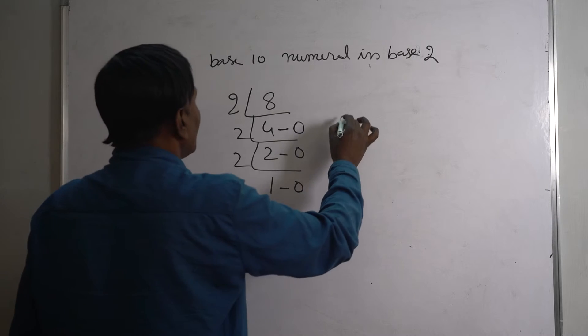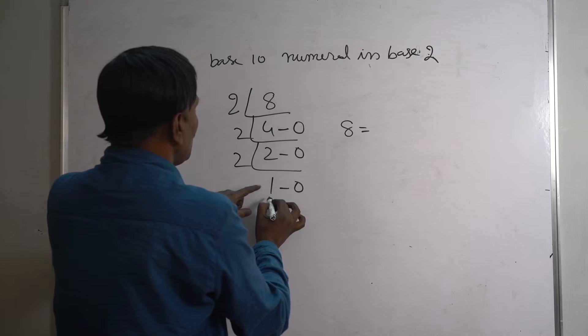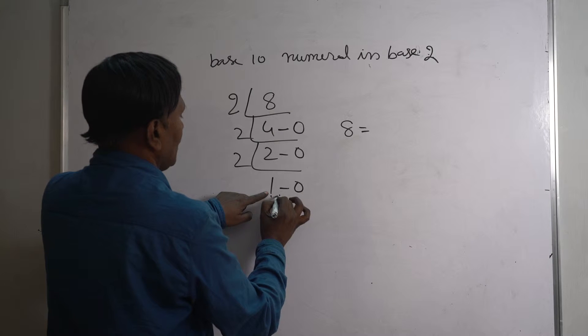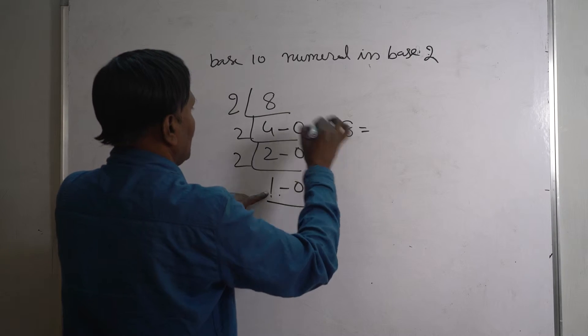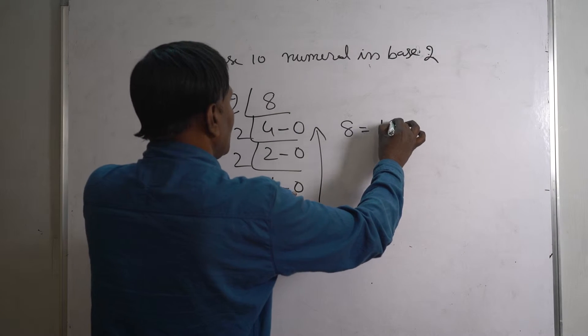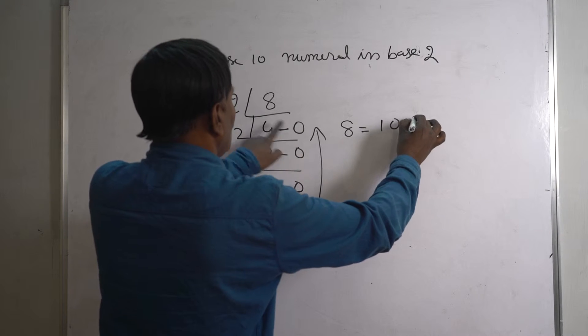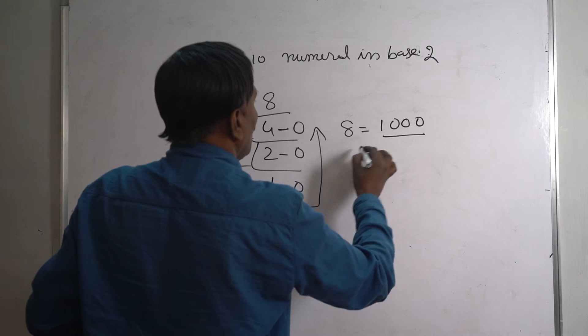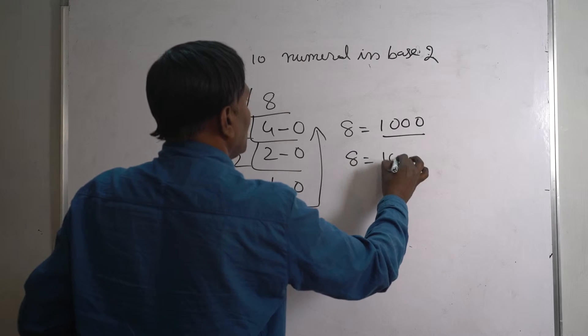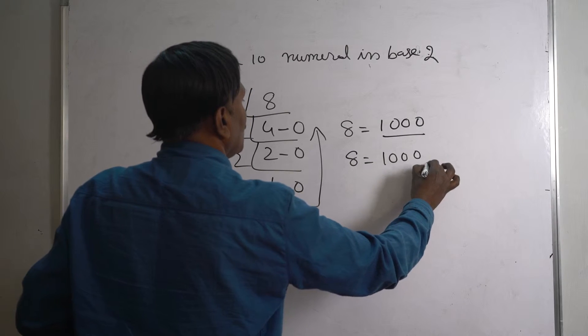So 8 can be written as, you take from this: 1, 0, 0, 0. So 8 is equal to 1000 in base 2.